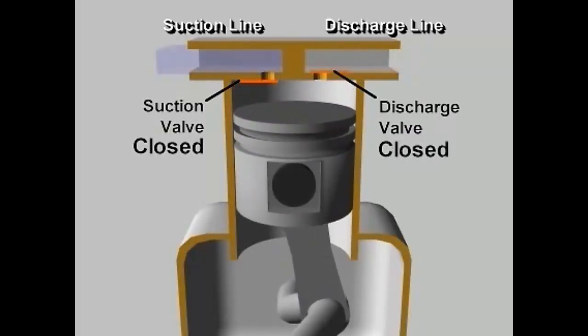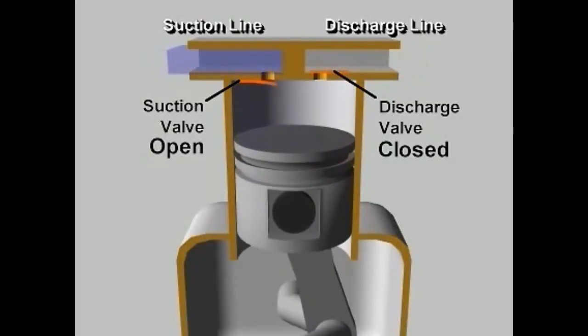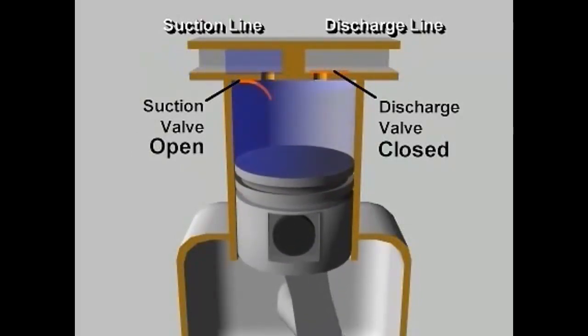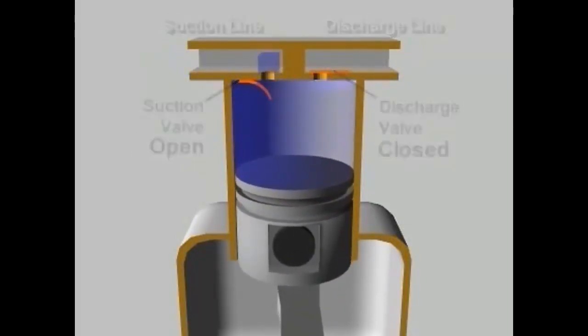When the piston begins its downward stroke, the discharge valve closes. The complete cycle then repeats during each revolution of the crankshaft.